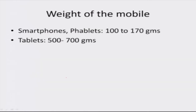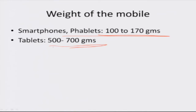Another parameter of a phone is how much does it weigh. Smartphones and phablets are in the region of 100 to 170 grams. Typically we carry them on our body, in our pockets or purses, and we don't want them to be very heavy. Tablets, because they are bigger, are in the range of 500 to 700 grams — about half a kilo.